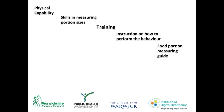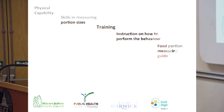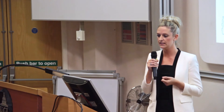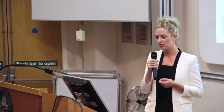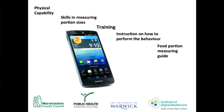To give an example of the linking process: you start with physical capability, linked to the sub-theme of skills — parents' difficulty in measuring portion sizes. This was linked to the intervention function of training, which was linked to instruction on how to perform the behaviour. The resulting app feature is a food portion measuring tool that parents can use when measuring their children's portions every day.